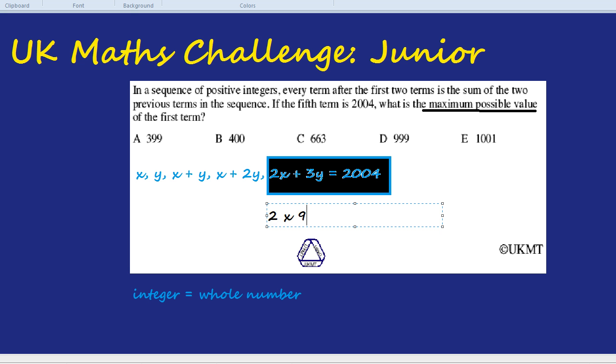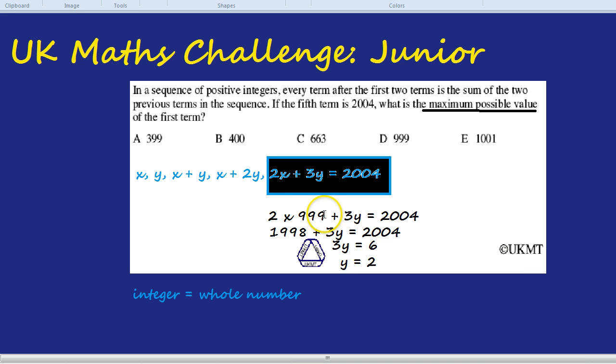Let's try the next one, 999. So 2 times 999 plus 3Y equals 2004. Let's see if that works. 2 times 999 is almost 1000, so we just go 2 times 1000 and take away 2. That's 1998 plus 3Y equals 2004. What's the difference between 2004 and 1998? It's 6. So 3Y would have to be that difference of 6. Now that looks much more like an integer or a whole number. Divide by 3 to both sides and you get Y equals 2. So that would be the smallest possible value of Y and so the biggest possible value of X of 999. That was so fun.